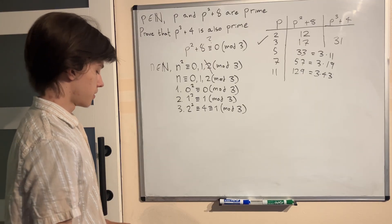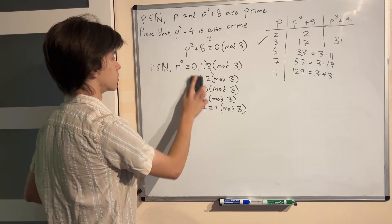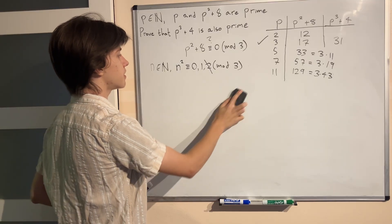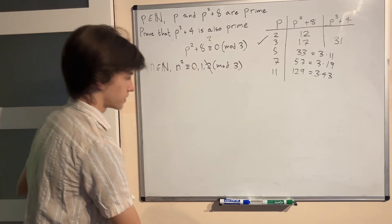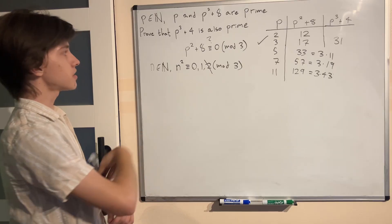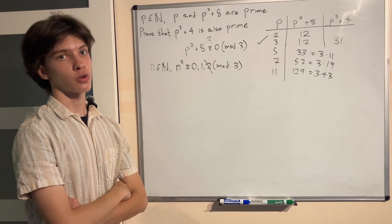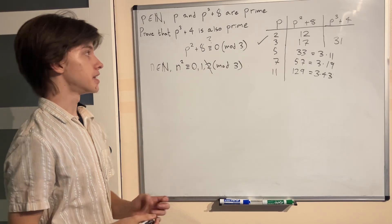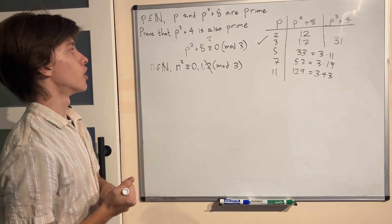So now we know that the square can only be congruent to 0 or 1 mod 3. We can say something about this expression. That p² can be congruent to either 0 or 1 mod 3. But it really can't. We don't have an either or.